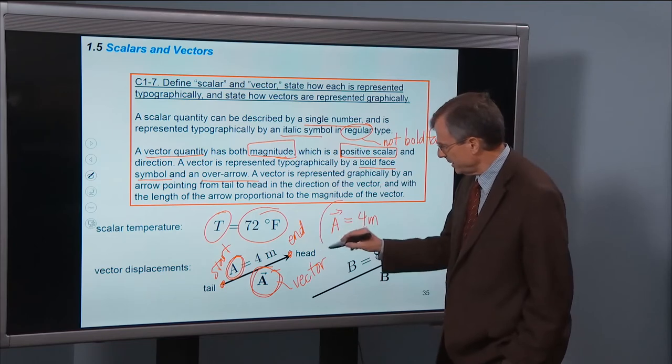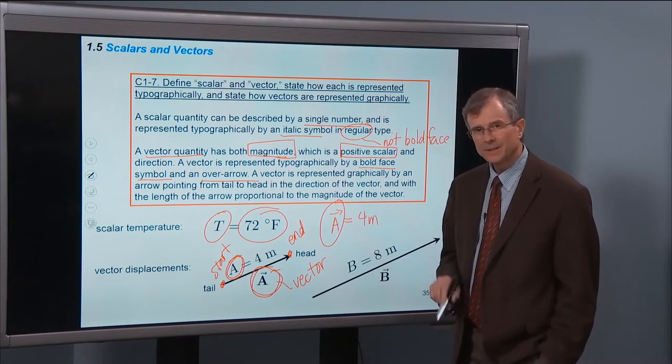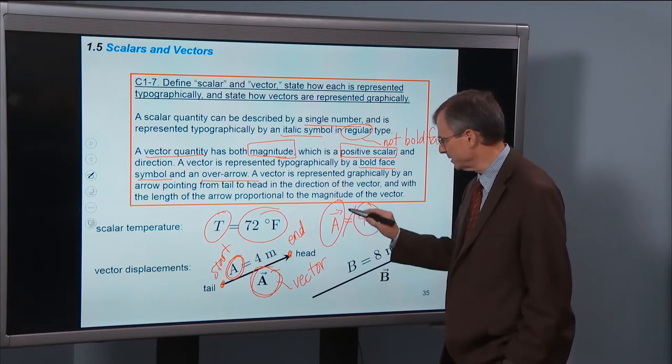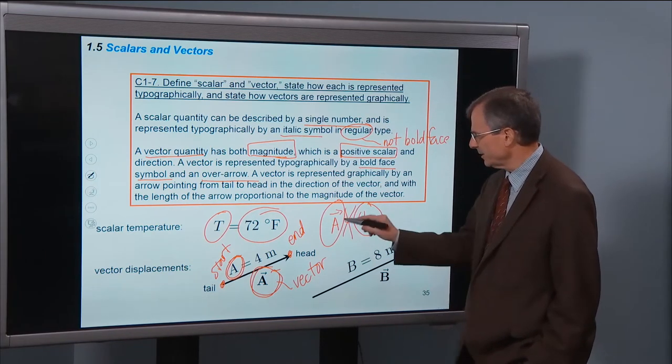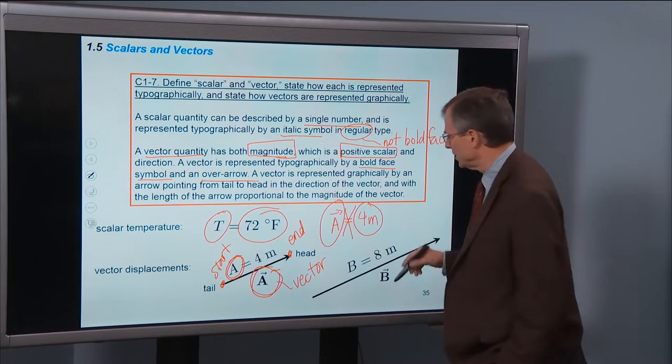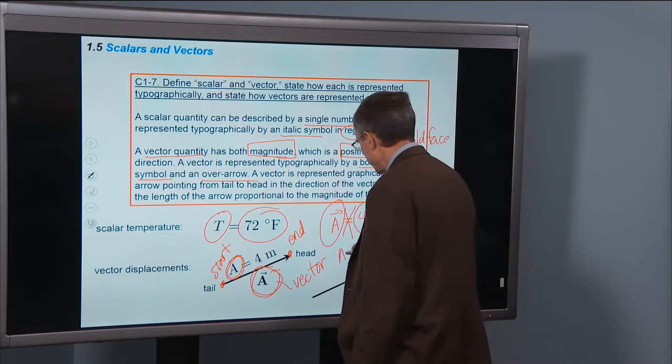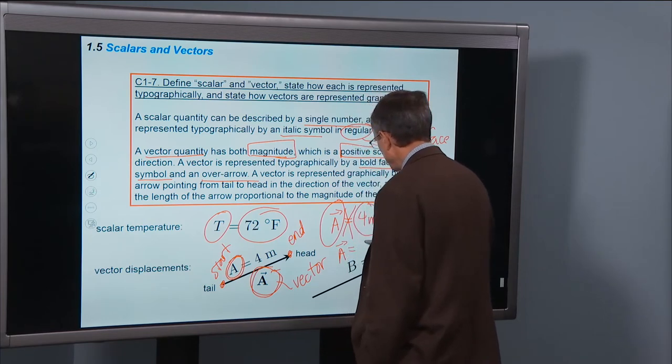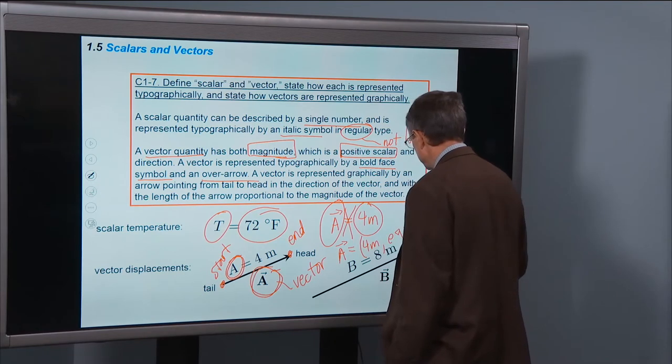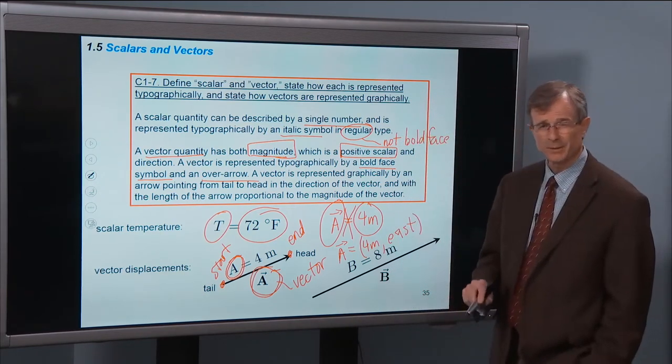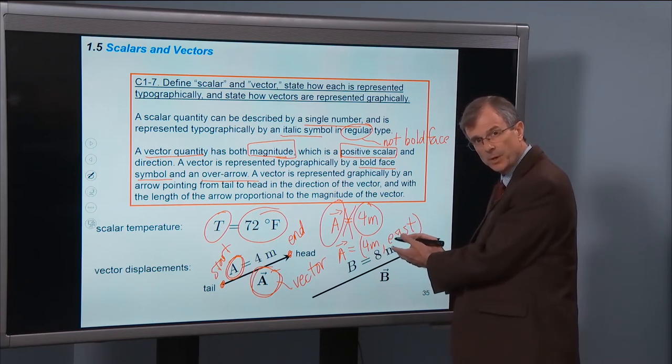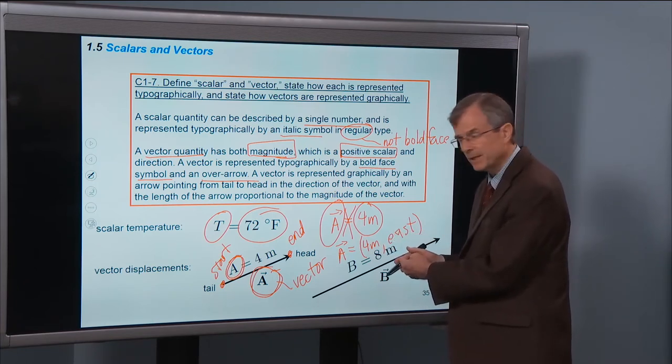I cannot set a equal to 4 meters. I can't set a vector equal to a scalar. This is a mathematically incorrect statement. The vector has both a magnitude and a direction. So it would be correct to say that a equals 4 meters to the east, or to the north, or whatever. So then I'm giving both pieces of information that are part of the definition of a vector.